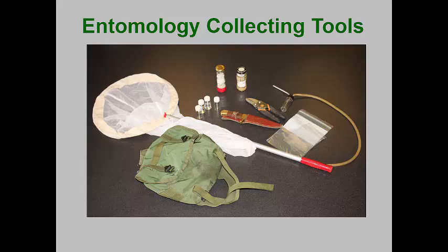Pruners assist in taking leaf and branch samples, and a large hunting-style knife can assist in digging around to find borers. An aspirator, or what I call a bug sucker, is useful for collecting small insects that may need to be looked at under a microscope for accurate identification. Entomologists also have killing bottles that are used to quickly kill insects so that they are not damaged, and collecting vials and plastic bags for samples are always useful.